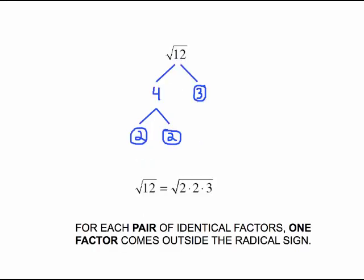Because 12 is the same as 2 times 2 times 3, that means the square root of 12 is the same as the square root of 2 times 2 times 3. What we do is we look for pairs. For each pair of identical factors, one factor comes outside of the radical sign. And whatever is left over, whatever is not paired up, stays inside the radical. So for this pair of 2s, a 2 will come outside the radical.